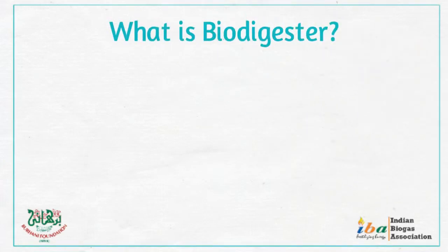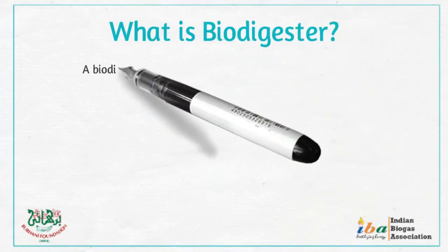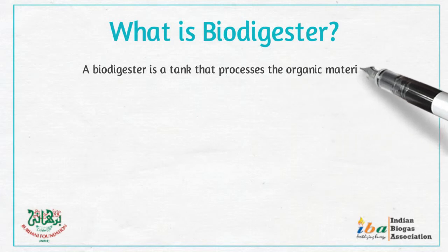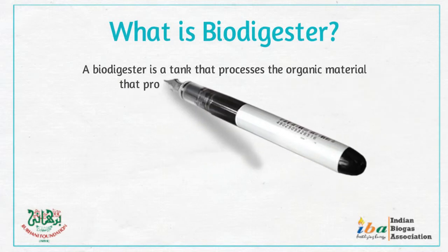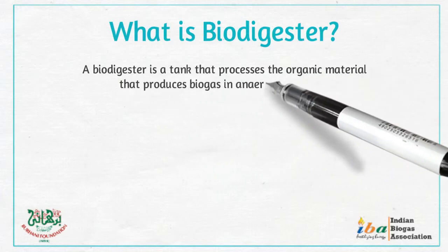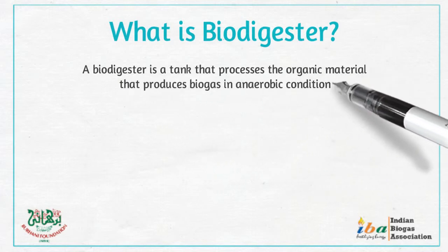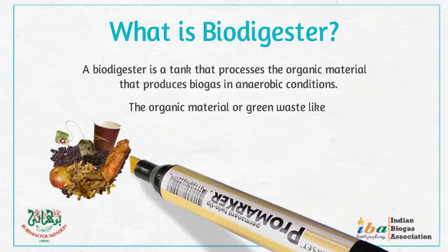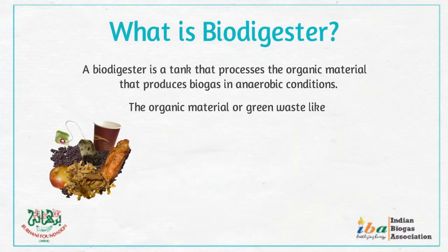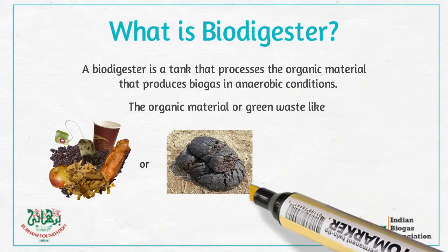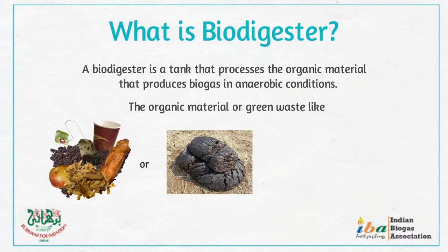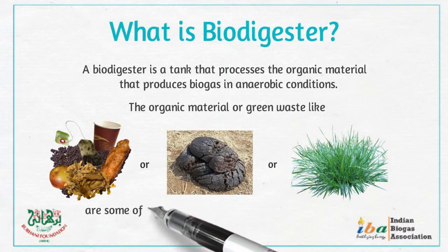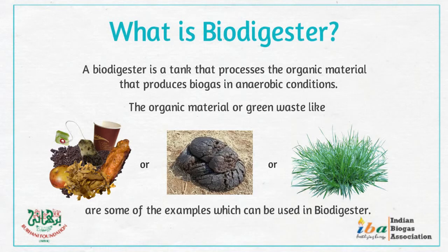What is a biodigester? A biodigester is a tank that processes organic material to produce biogas in anaerobic conditions. The organic materials include green waste like food waste, vegetable waste, cow dung, poultry litter, press mud, and garden and lawn clippings — some examples which can be used in a biodigester.